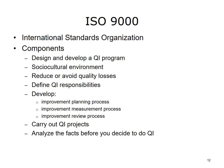The International Standards Organization, in 1987, introduced the initial ISO 9000 Guidelines for Performance Improvement. Components of these guidelines include: design and develop a QI program; create a socio-cultural environment and a structure that supports improvement; reduce or avoid quality losses; define QI responsibilities; develop an improvement planning process; develop an improvement measurement process; develop an improvement review process; and carry out QI projects and analyze the facts before you decide to do QI.